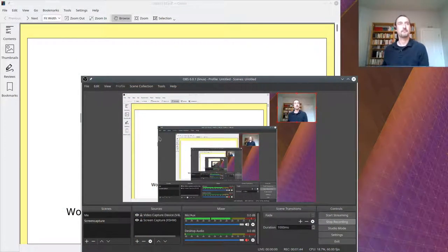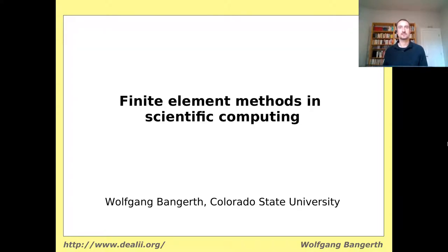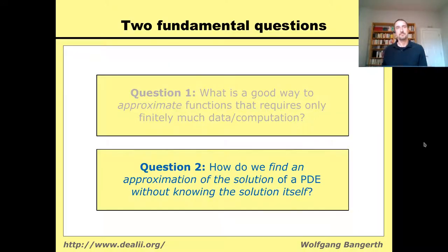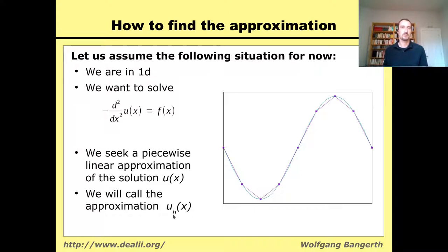Let's look at this from a practical perspective. It uses a concept called weak solutions, and in particular the Galerkin process. The question I'd like to answer in this lecture is: how do you find an approximation of the solution of a PDE without actually knowing the solution? Let's go back to the one-dimensional case and solve something like the Laplace equation. In 1D, the Laplace equation is simply minus the second derivative of u equals f. I'd like to find a piecewise polynomial approximation, which I'll call u_h, where h indicates the size of the mesh.